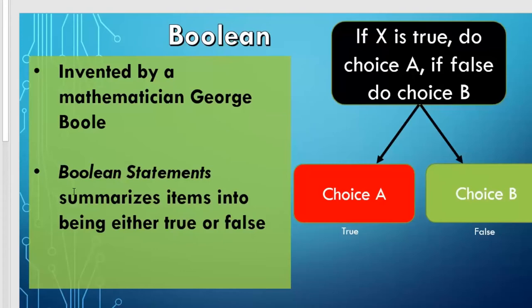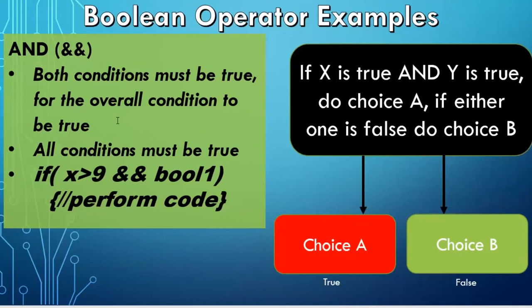We're going to focus on the main Boolean operators. The main one is AND. Both conditions have to be true in order for you to perform an action. In our example down here, I wrote: if x is greater than 9 AND Boolean1 is true, if those are both true, then we're going to perform whatever code is inside the brackets.